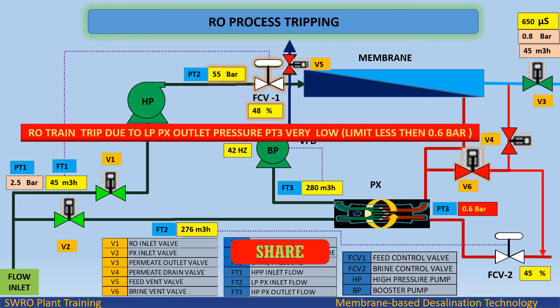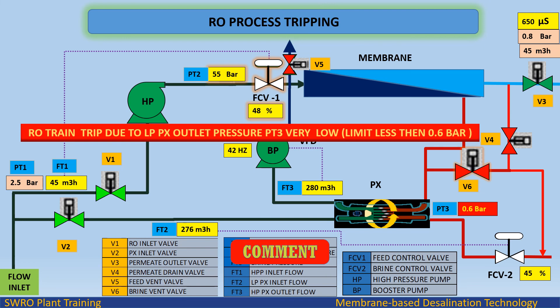RO train trip due to LPPX outlet pressure very low, limit less than 0.6 bar.